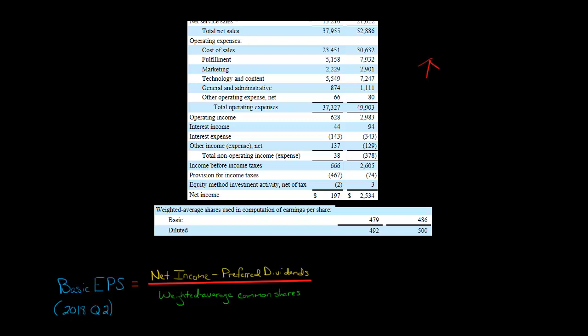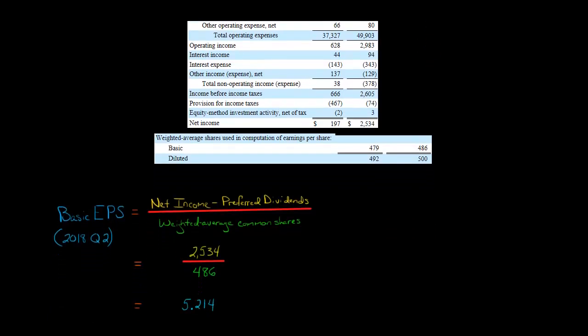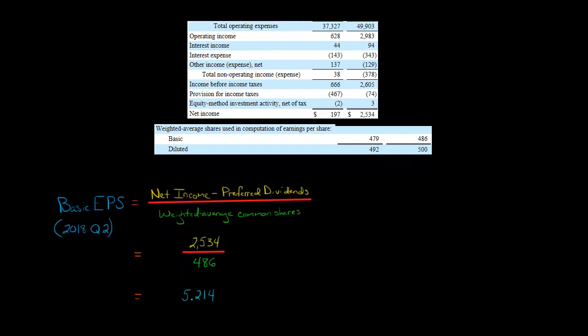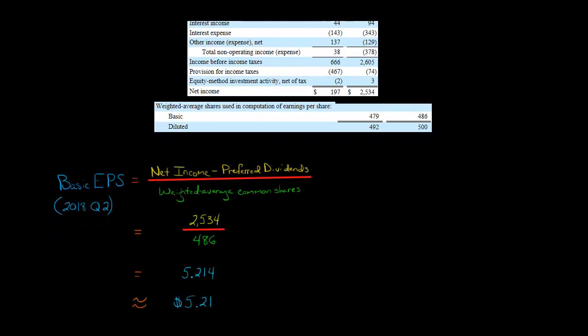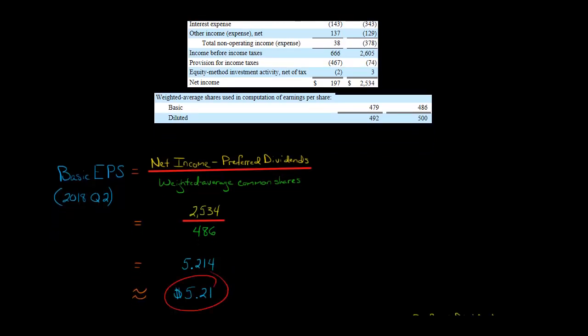So this again, this is a million, so that's $486 million shares, and we're just going to use the basic. Then we'll get to diluted later. So if we take $2,534 divided by 486, that gives us $5.214, and we're going to round that. It'll be $5.21 a share. That's the basic earnings per share that Amazon had for the second quarter of 2018.